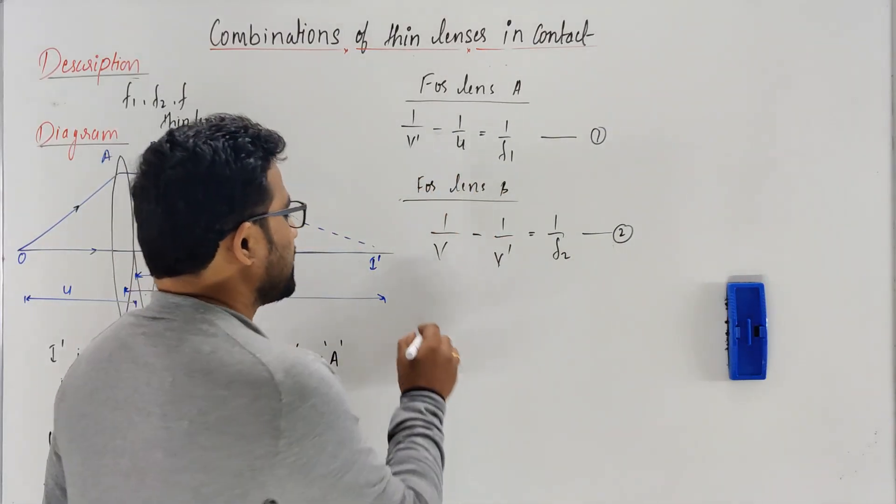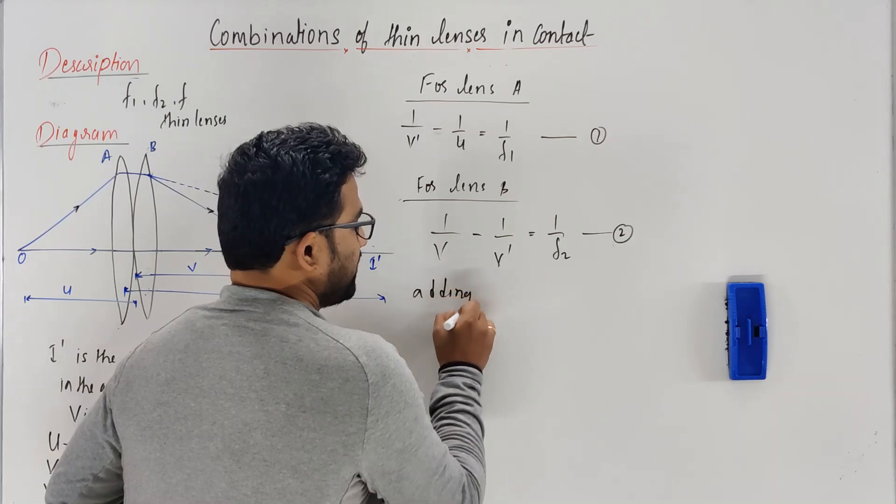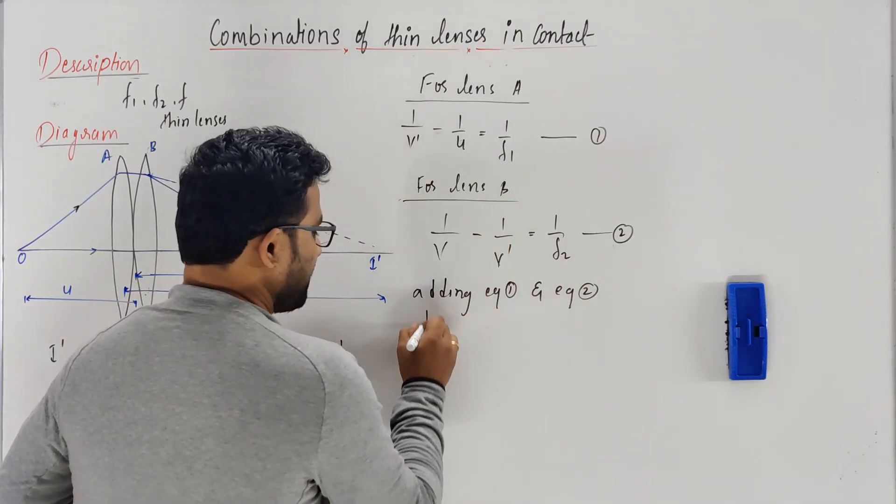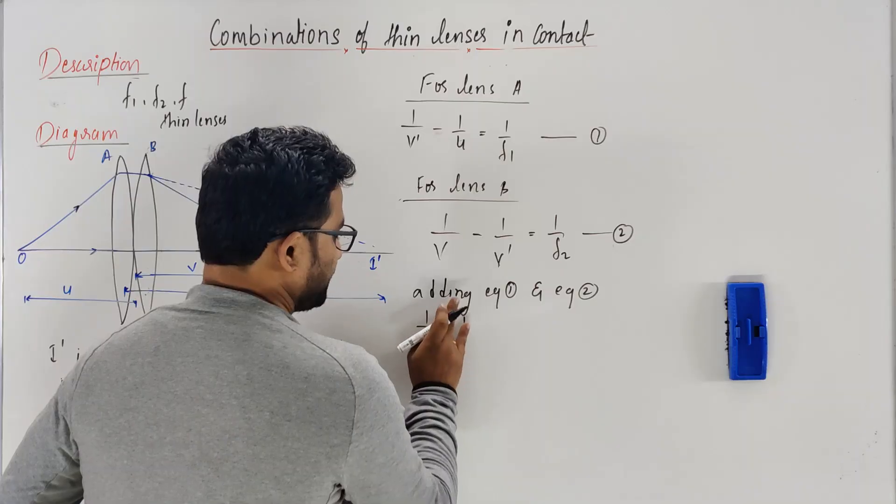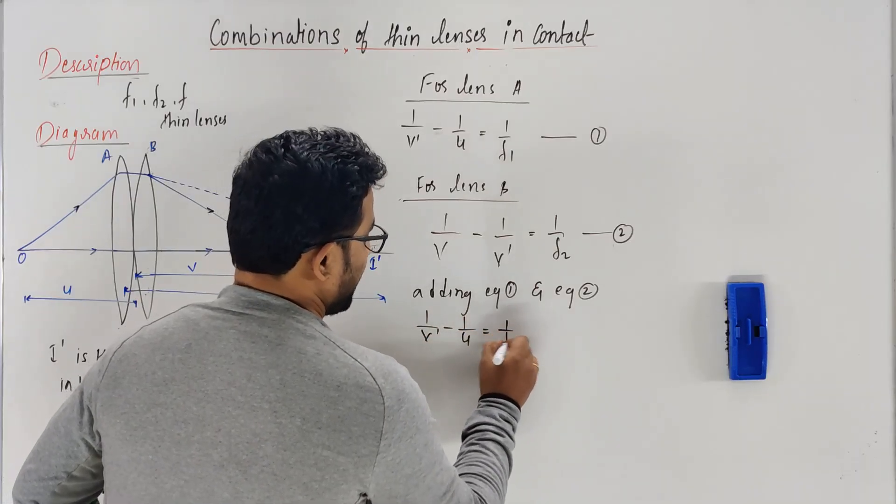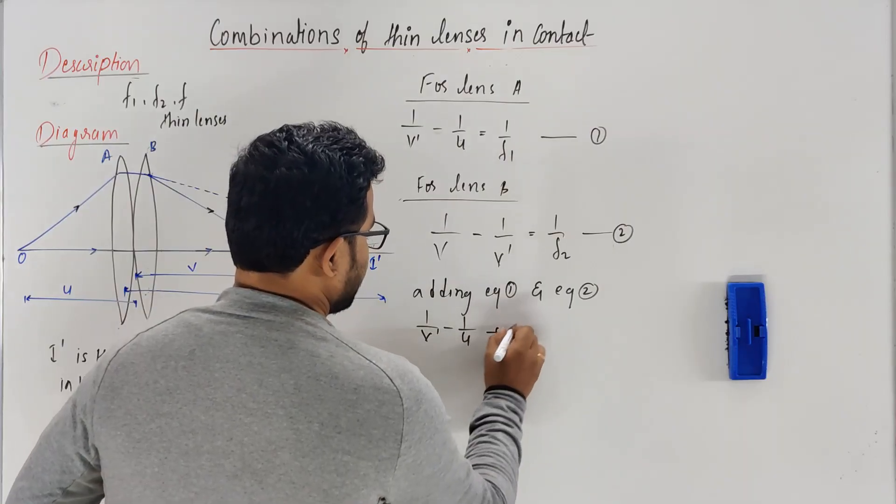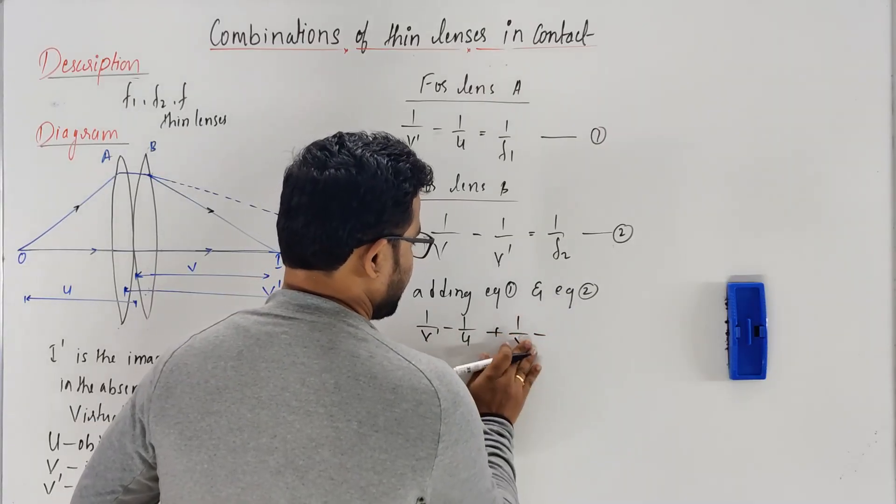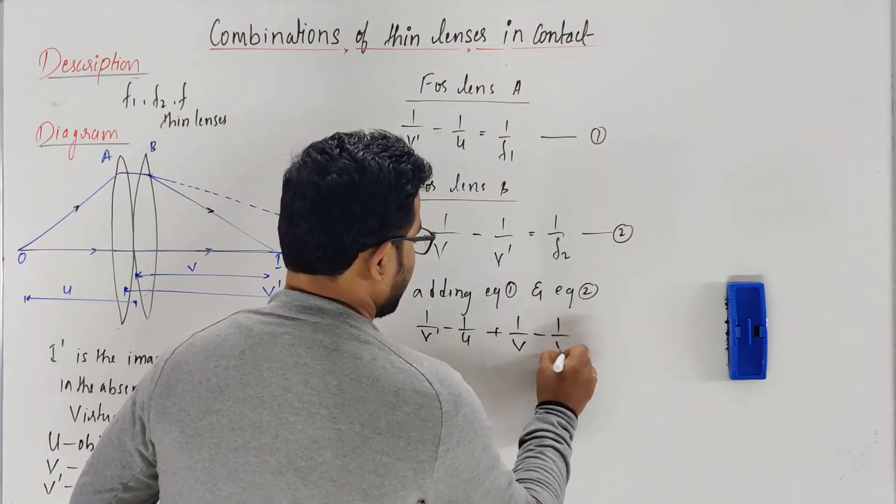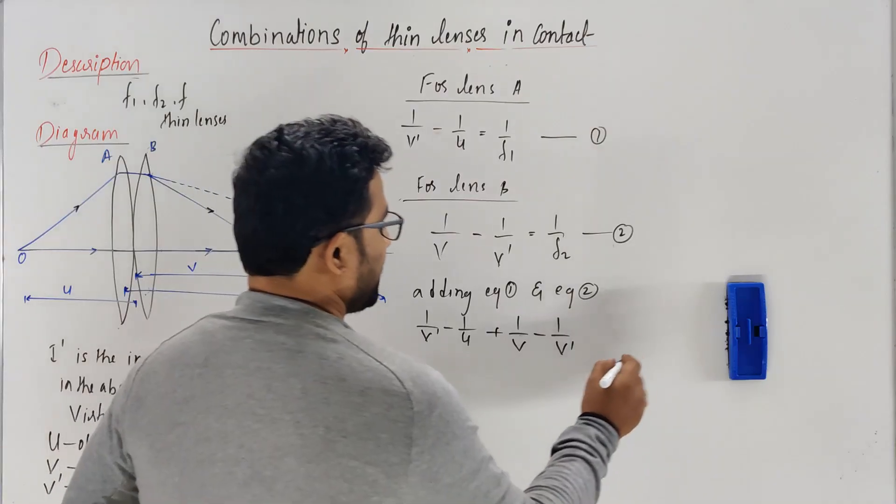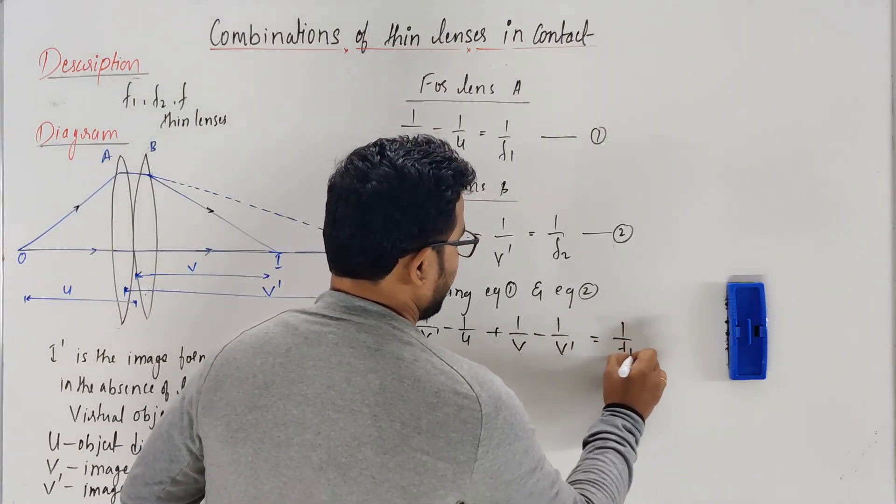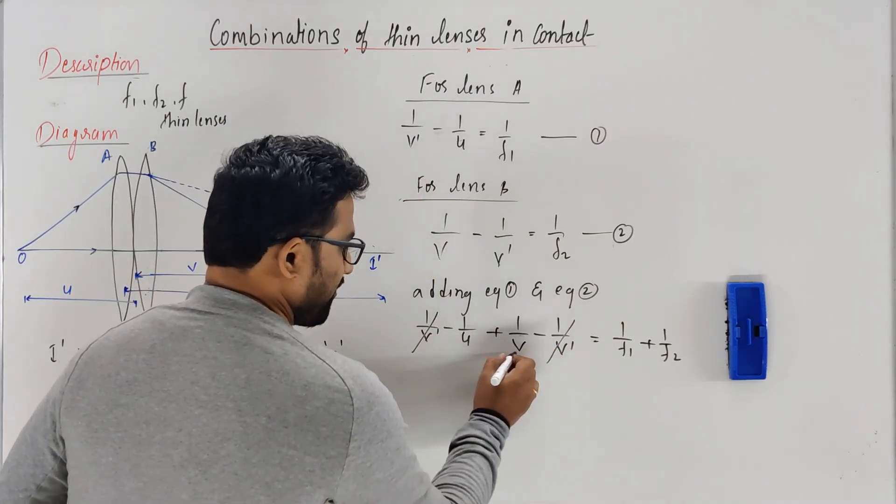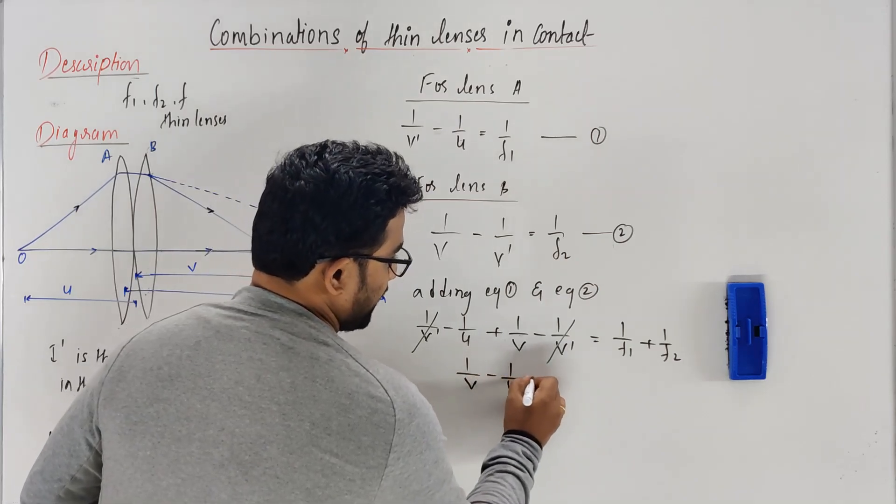Adding equations 1 and 2: 1/v' - 1/u plus 1/v - 1/v' equals 1/f1 plus 1/f2. You can cancel out the 1/v' terms. You have 1/v - 1/u equals 1/f1 plus 1/f2.